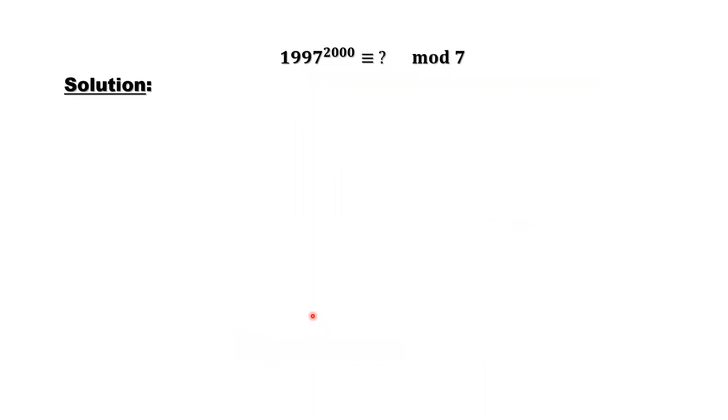Now in general, how to solve this kind of question? First of all, look at this base. 1997 is a big number. What is the remainder for this number divided by 7? We cannot easily see that, we need to calculate. We can find it.